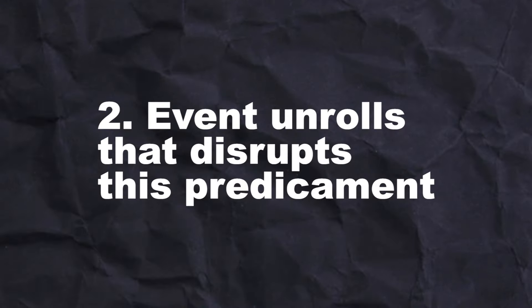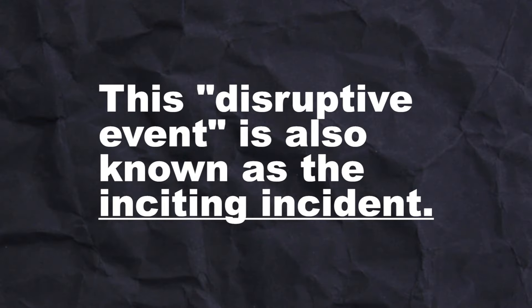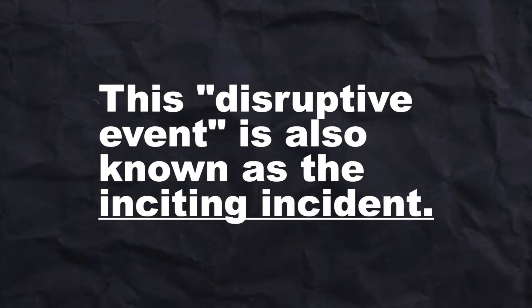Step two: an event that unfolds and disrupts this predicament. Now that you've identified a character and their predicament, you need to identify an event that disrupts it. This disruption causes the story to actually happen — to unfold on the page. This disruptive event is also known as the inciting incident. In this case, Sada, a confident woman a similar age to Jasmine, becomes the first client of her at-home salon.